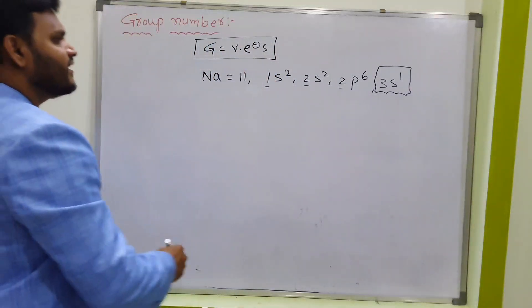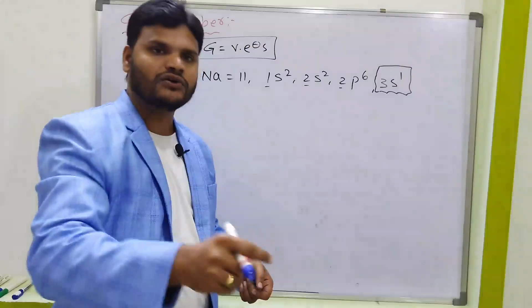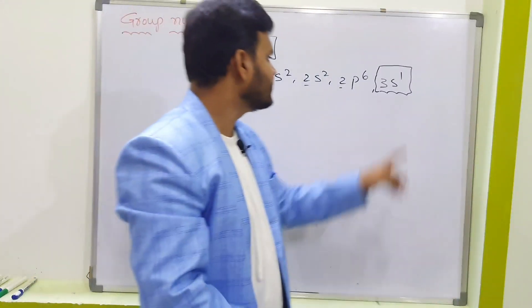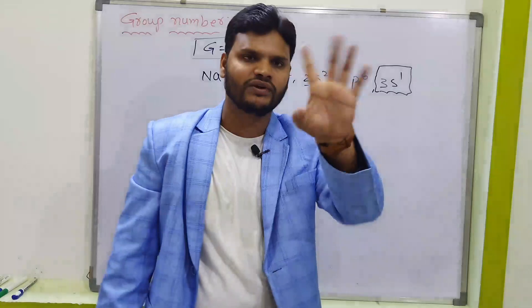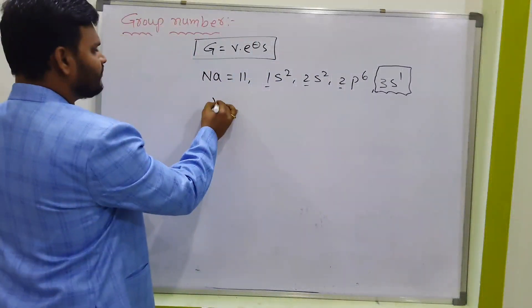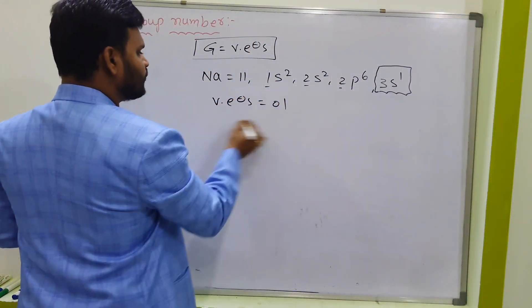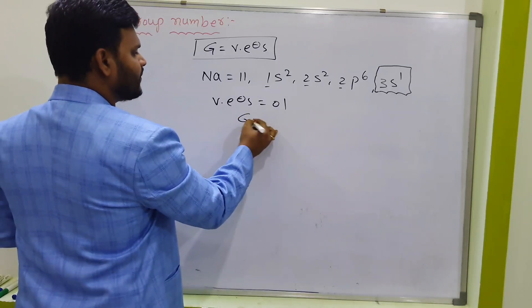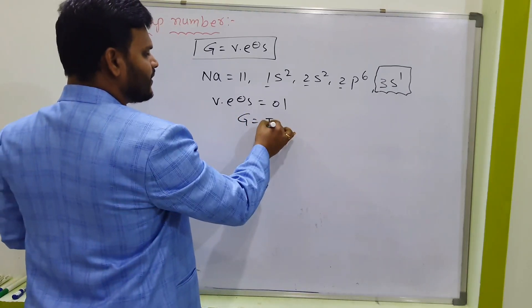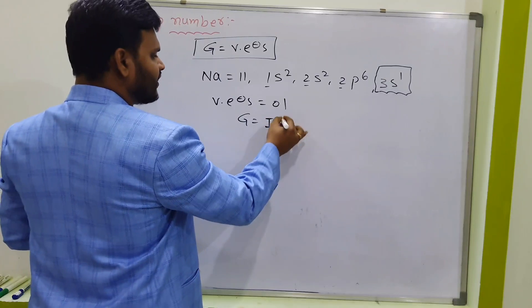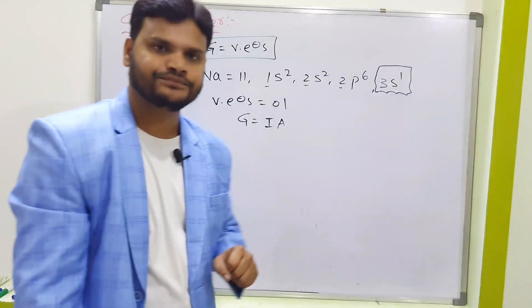The third energy level is the outermost energy level, and it contains only one electron. So valency electrons equal 1, meaning the group number is also 1 — represented as Group 1A in Roman numerals. Energy level, shell, orbit, and period all mean the same thing — terminology differs but meaning is the same.